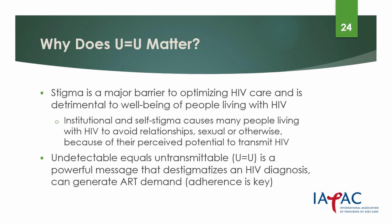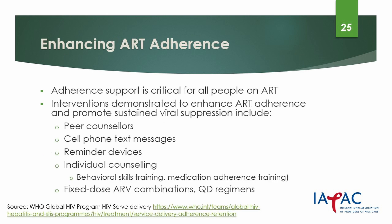We mentioned U equals U a few slides ago — why does it matter so much? Stigma is still a major barrier to the HIV care continuum and detrimental to the well-being of people living with HIV and their partners. Institutional and self-stigma cause many people living with HIV to avoid relationships, both sexual and otherwise, because of their perceived potential to transmit HIV. Undetectable equals untransmittable, or U equals U, is a powerful message that destigmatizes an HIV diagnosis and allows people living with HIV to live a normal sexual life. Adherence to antiretroviral therapy is the primary determinant of viral suppression and the risk of onward HIV transmission. Optimal adherence is an essential component of the U equals U messaging, but suboptimal adherence is a significant challenge worldwide.